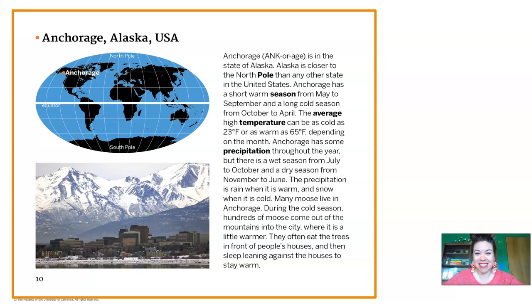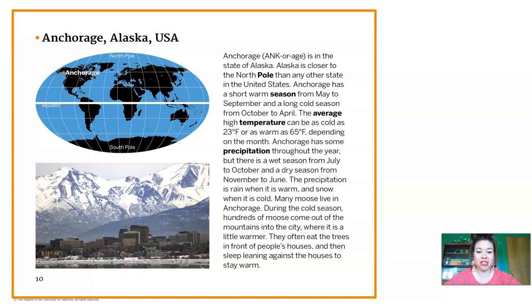Anchorage is in the state of Alaska. Alaska is closer to the North Pole than any other state in the United States. Anchorage has a short warm season from May to September and a long cold season from October to April. The average high temperature can be as cold as 23 degrees Fahrenheit or as warm as 65 degrees Fahrenheit depending on the month. Anchorage has some precipitation throughout the year but there is a wet season from July to October and a dry season from November to June. The precipitation is rain when it is warm and snow when it is cold. Many moose live in Anchorage. During the cold season, hundreds of moose come out of the mountains into the city where it is a little warmer. They often eat the trees in front of people's houses and then sleep leaning against the houses to stay warm.